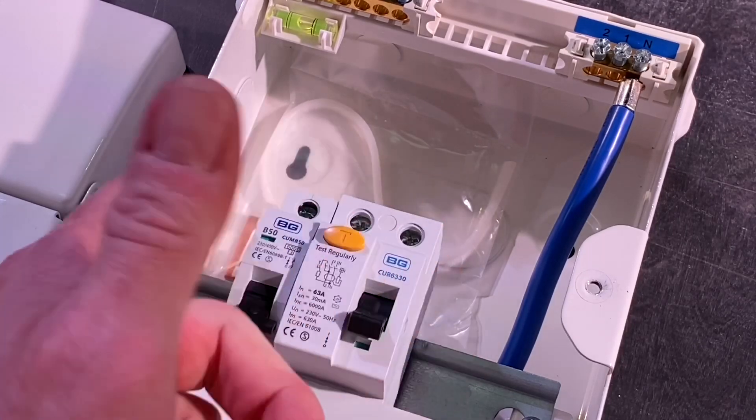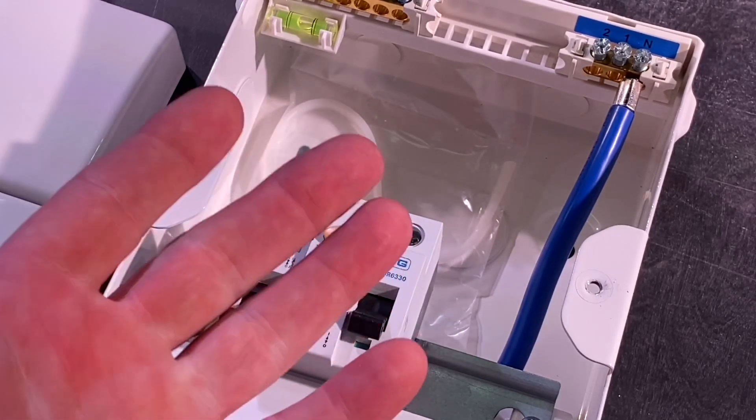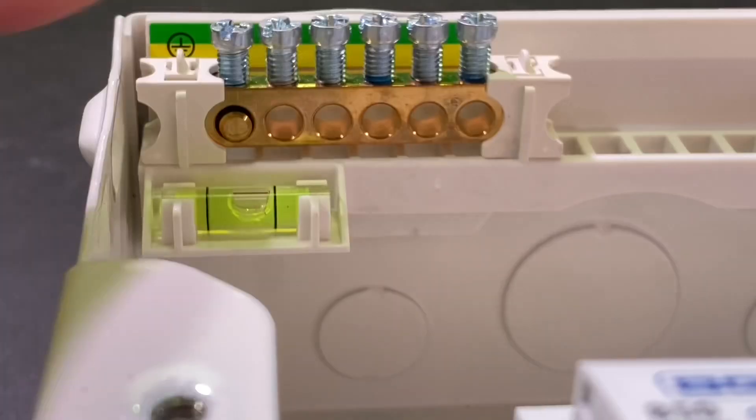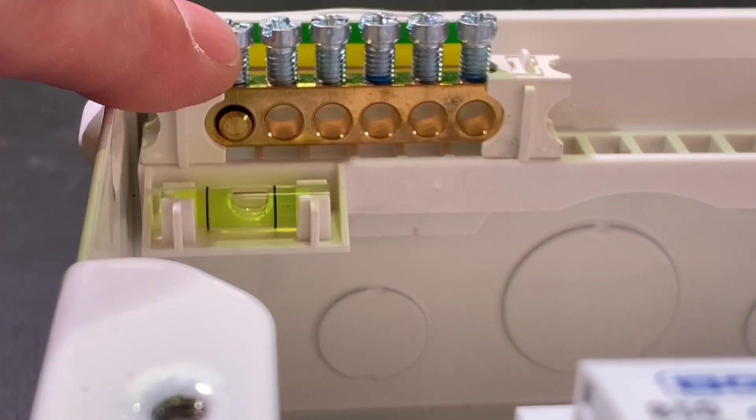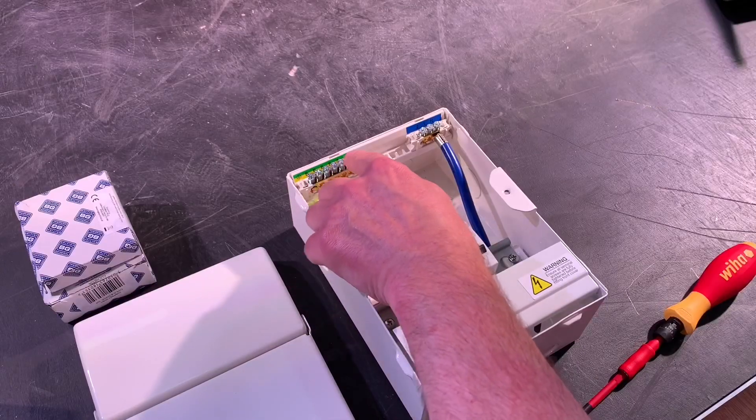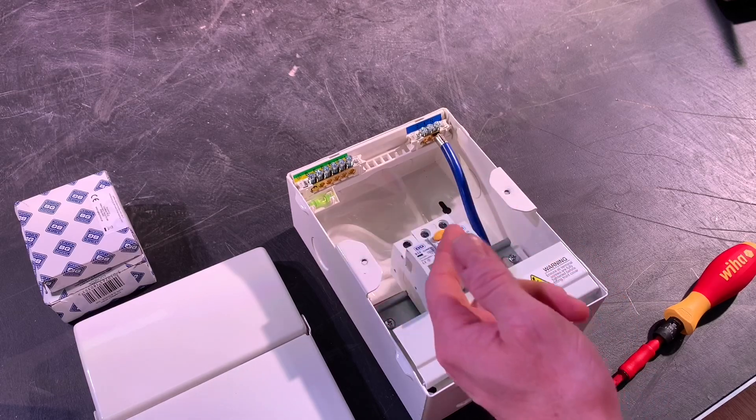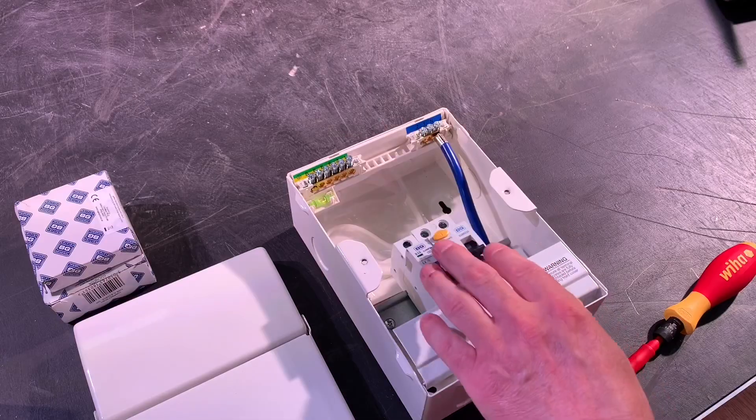The screws within here, again, all use the same screwdriver, they've all backed out. So the earth bar and the neutral bar screws are backed out and they've got those really large holes that we saw before that we really like. And look how many earth terminals you get. You could put protective bonding conductors of gas and water, the main earthing conductor and CPCs in there. They give you a lot of terminals once again.